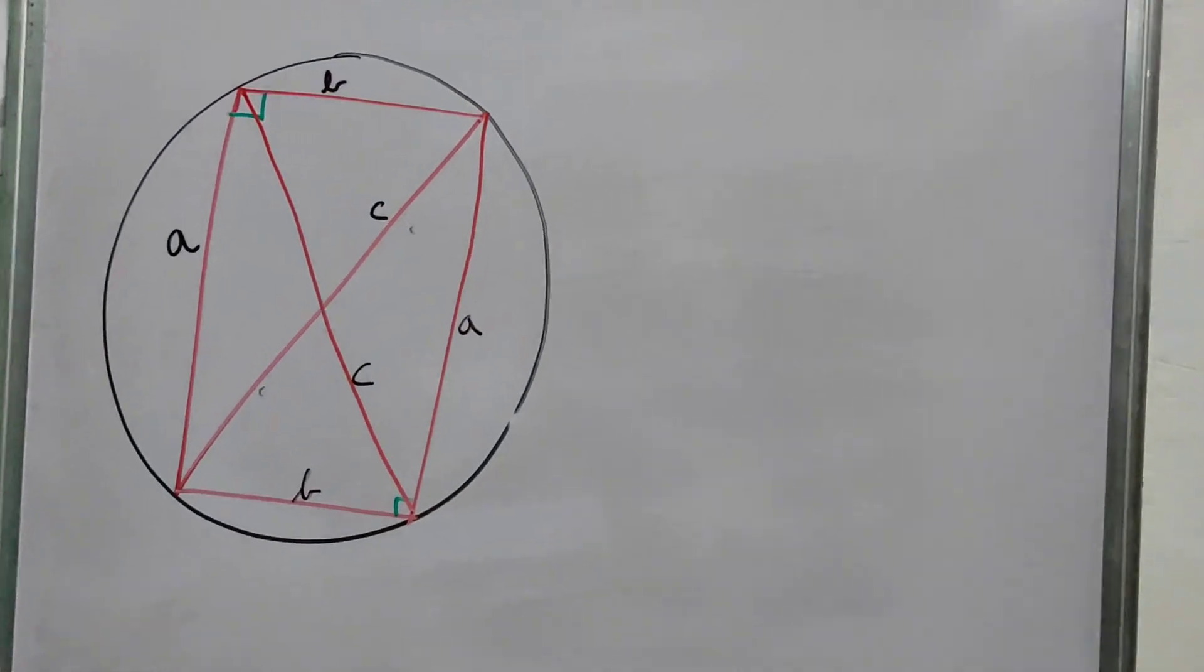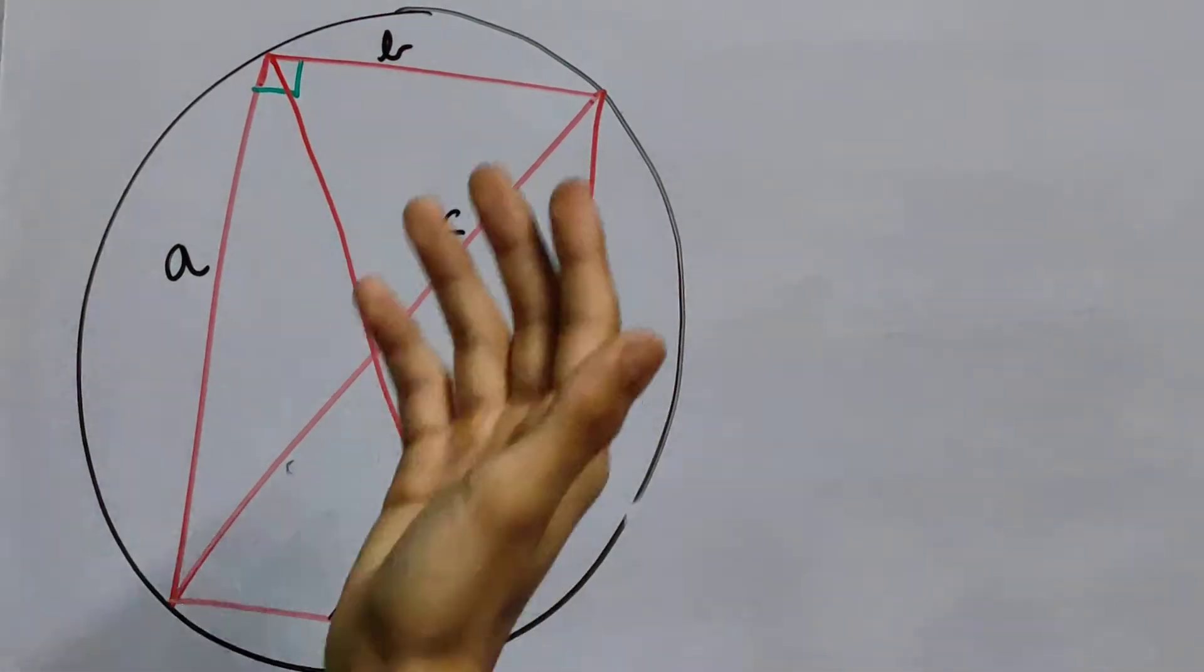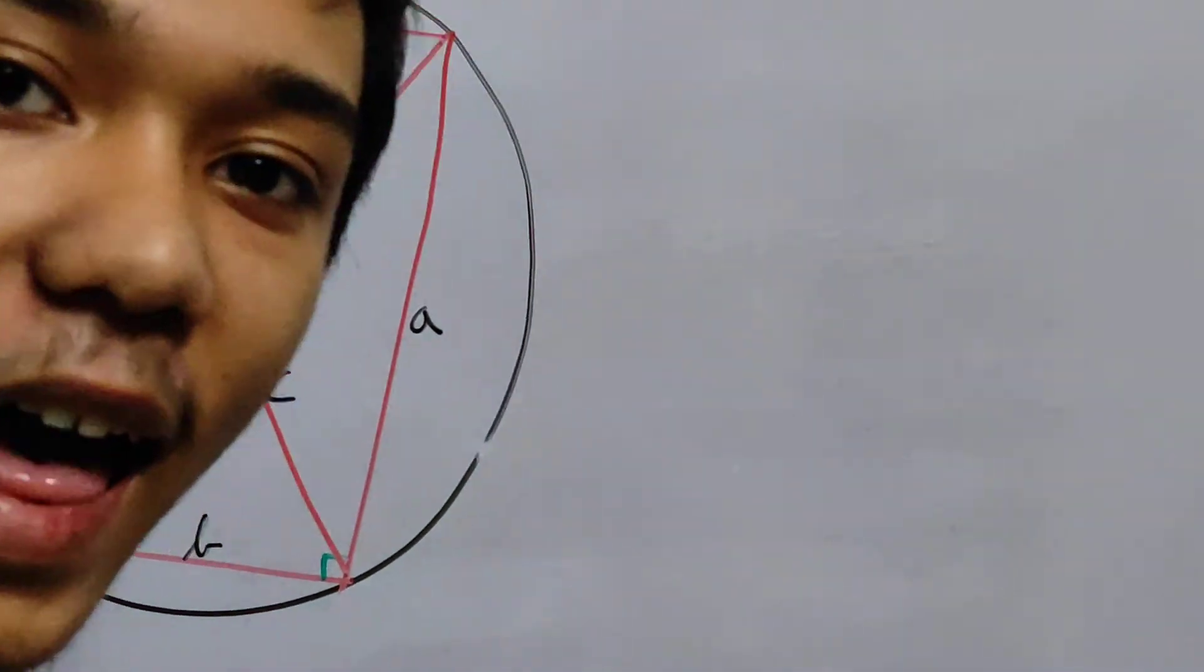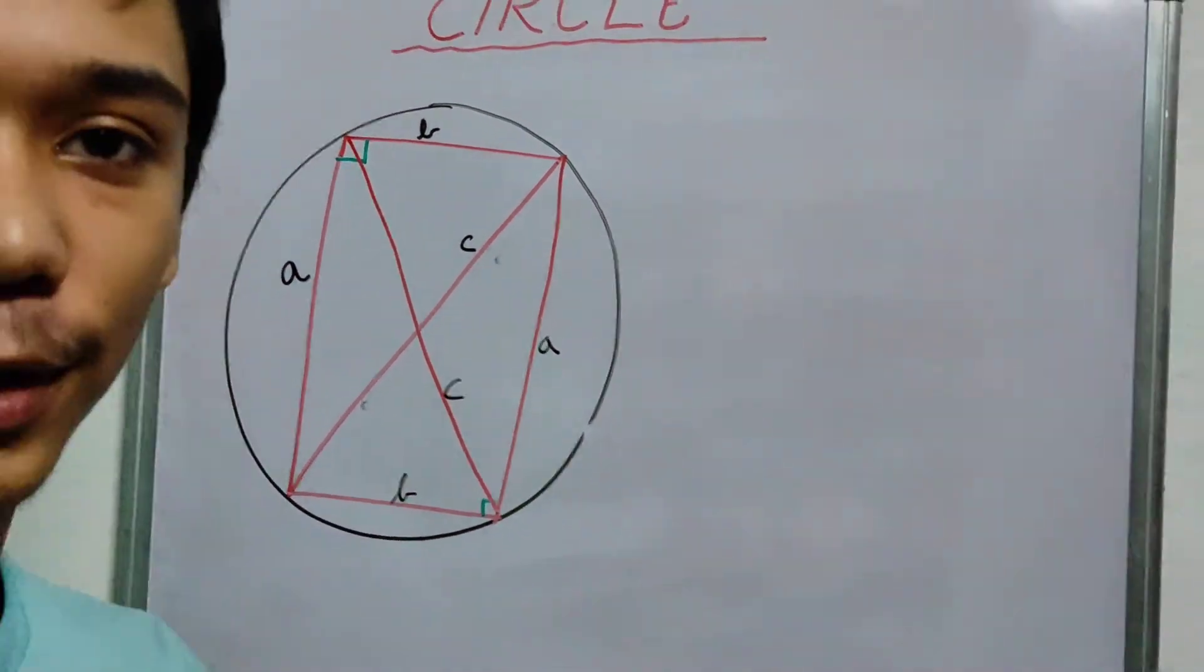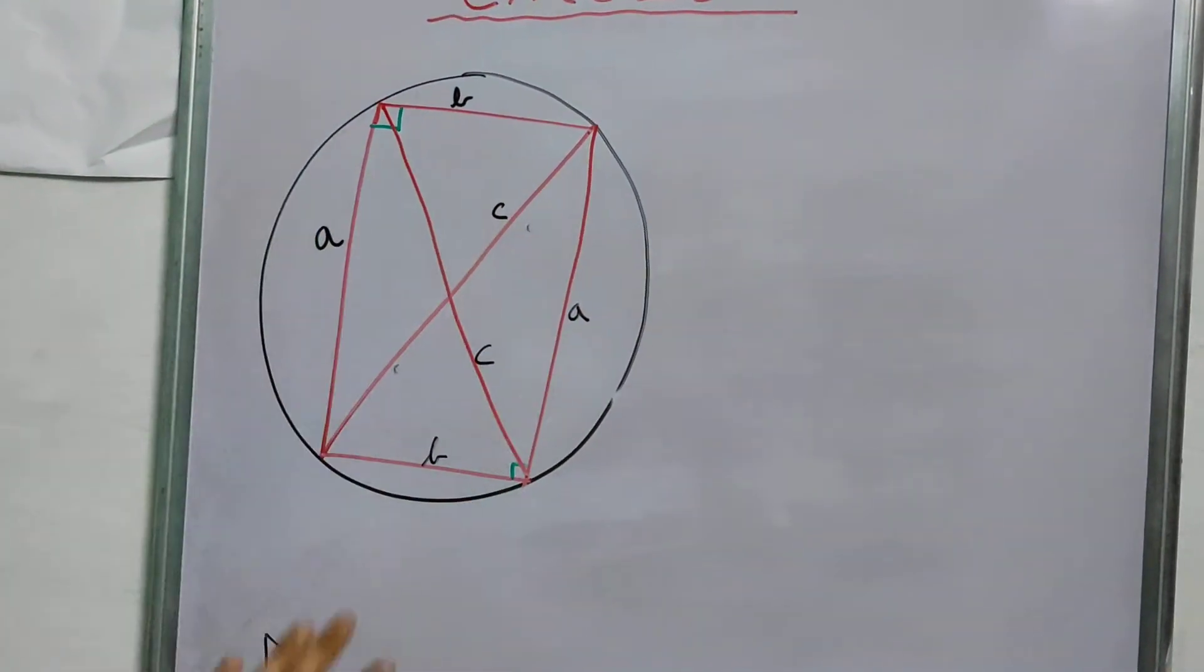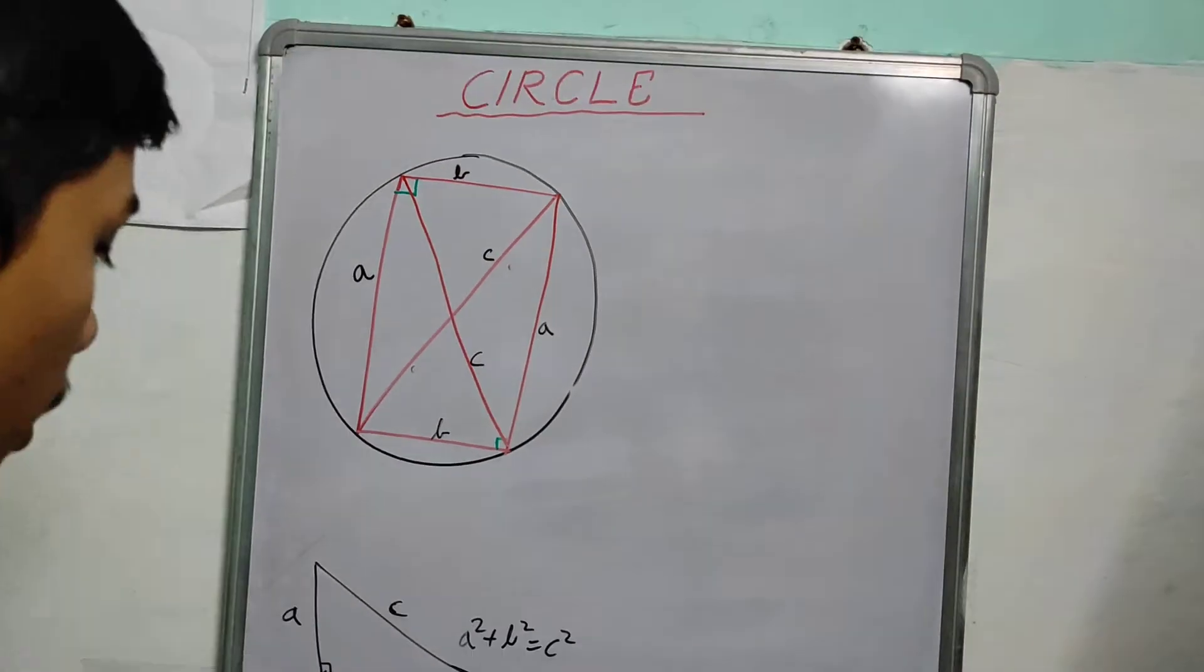Now that we are done, you can do this yourself. Just use the Ptolemy's theorem once, and you can easily see the Pythagoras theorem comes out of it. Pause this video and do this on your own.